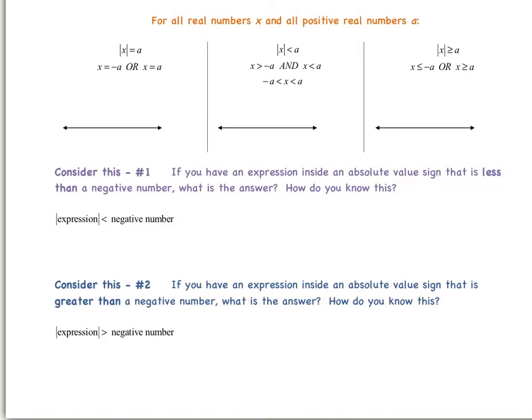In a previous video, I've already talked with you about how it doesn't matter if x equals a negative a or if x equals a positive a — the absolute value of that will always be a positive a. For example, if x equals negative 5, then the absolute value of negative 5 is 5. And if x equals positive 5, the absolute value of positive 5 is also 5.